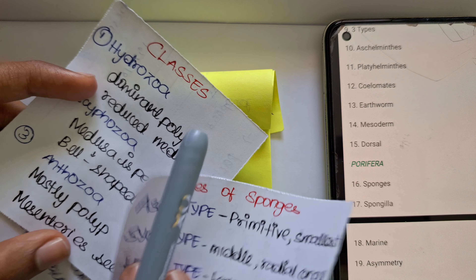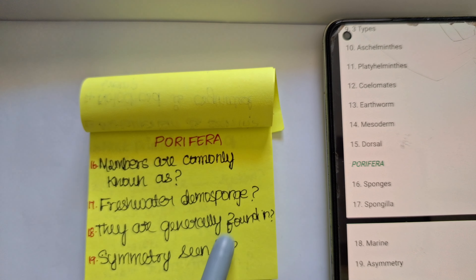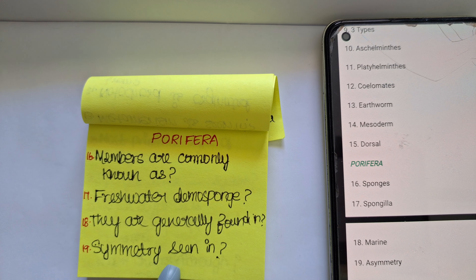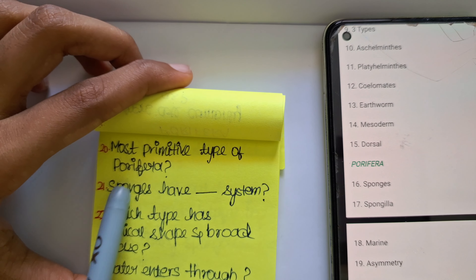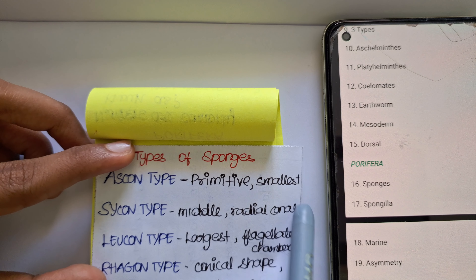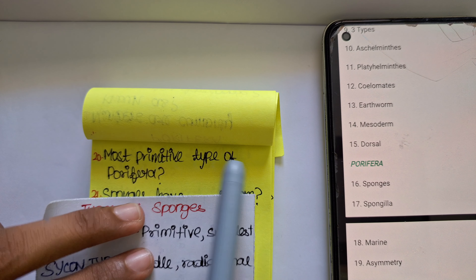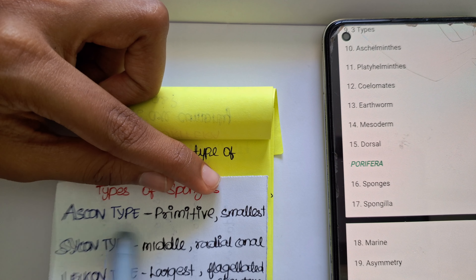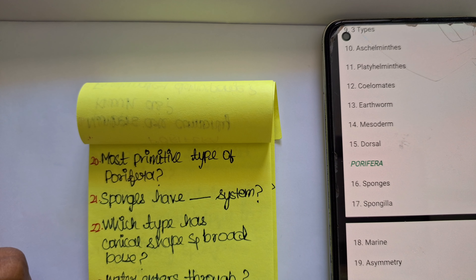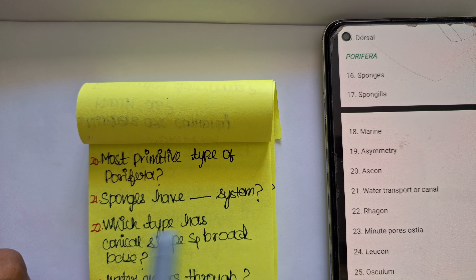From after Platyhelminthes we will have only questions from your NCERT. The Porifera are generally found in marine. The symmetry seen in Porifera is asymmetry. Porifera or sponges are of four types: the first is ascon type, the next is sycon type, the next is leucon type, and the next is rhagon type. The most primitive type is ascon. Sponges have a special water transport or canal system.